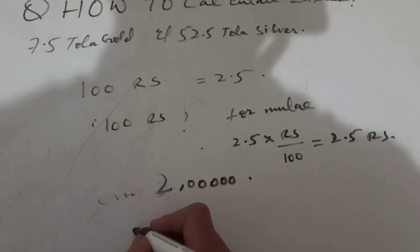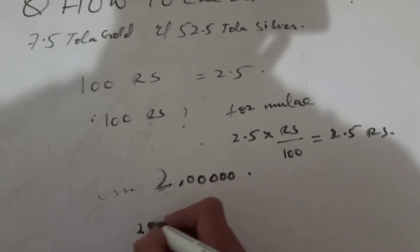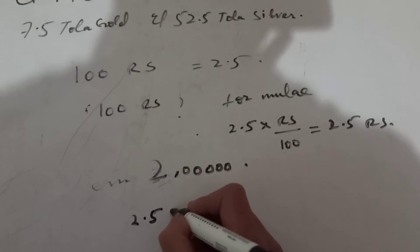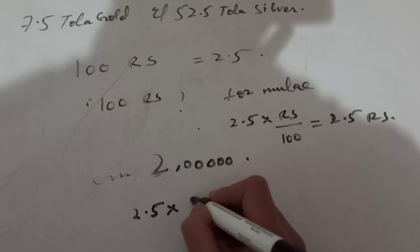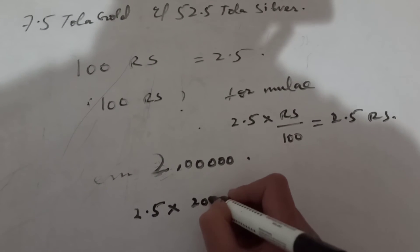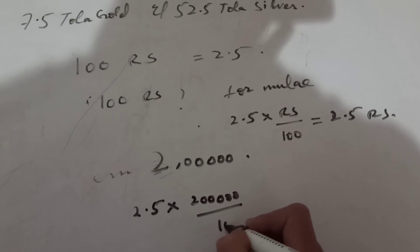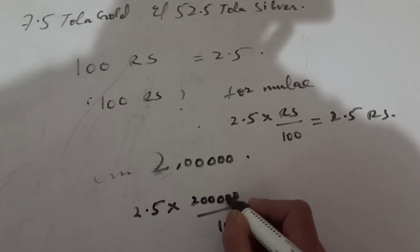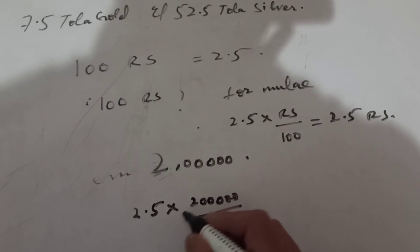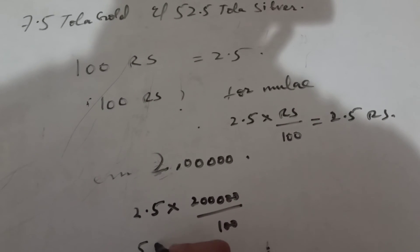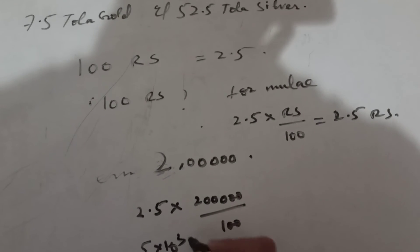Okay. Now, how you will calculate with this formula? You have to do nothing but you have to do this thing. 2.5 multiplied by 2 lakh rupees. And you have to divide it with 100 and cancel these two zeros. Now, you got 2 into 2.5. That is 5 into 10 raised to the power 3.